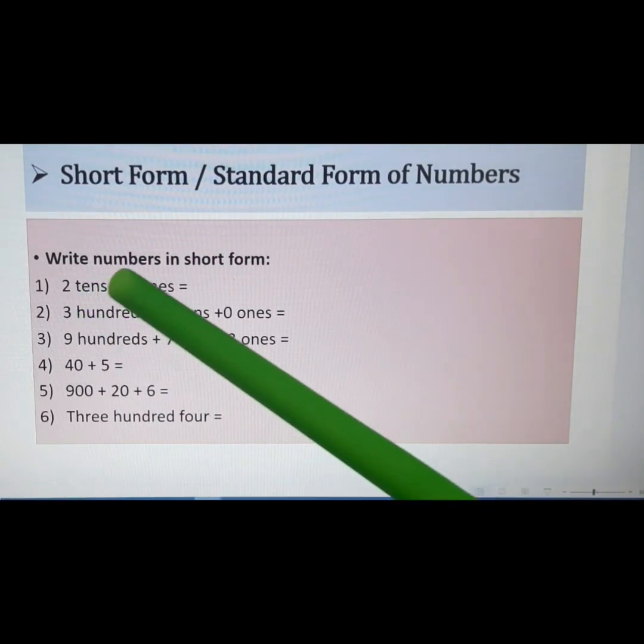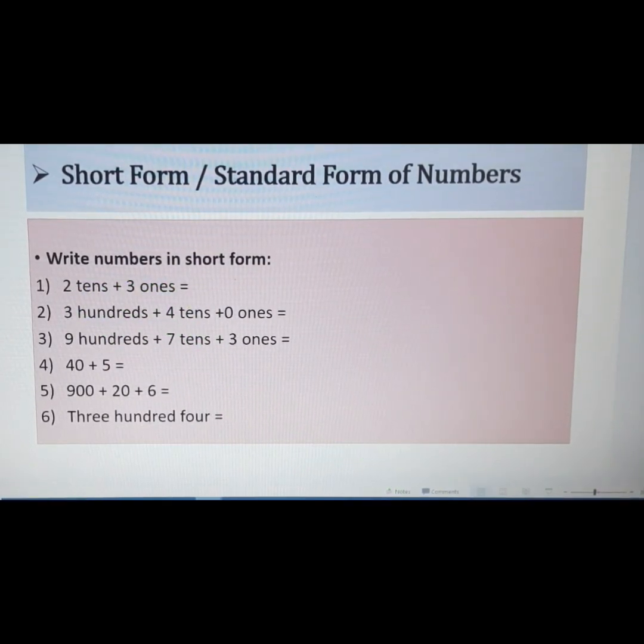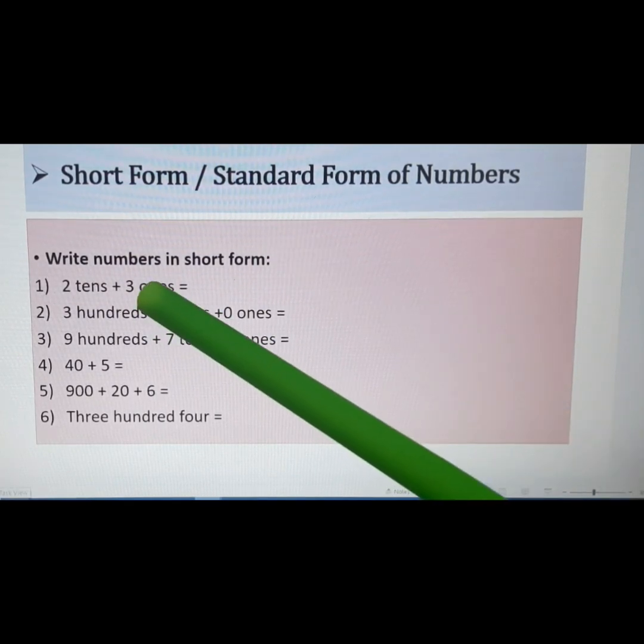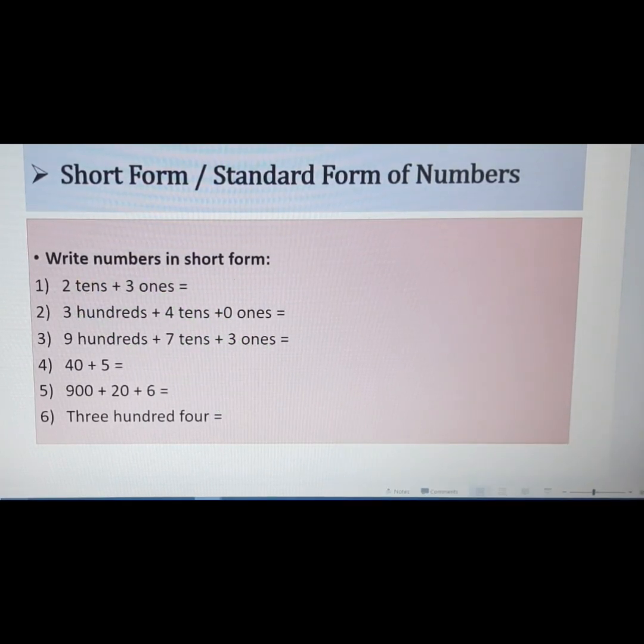Question 1 is 2 tens plus 3 ones. So if you have 3 pieces here, it means we have 3 ones here. And 2 strips means we have 2 tens here. So what can be the number formed? Can you guess? Can you try?